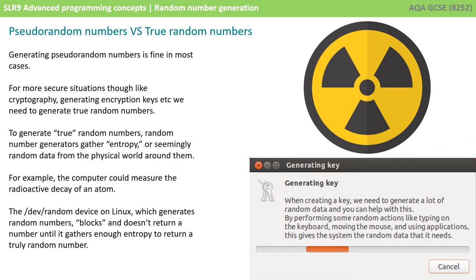Now, as mentioned, there's also something called true random numbers. Now, generating true random numbers is actually a lot more difficult, which is why most of the time we're happy to use a seed value and just generate pseudorandom numbers. But for more secure situations like cryptography, generating encryption keys, we need to be able to generate truly random sequence of numbers.